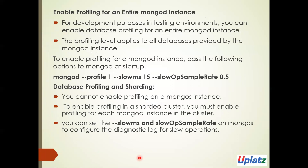To enable profiling for entire MongoD instances — for development or testing purposes — we can enable database profiling for entire MongoD instances. The profiling level is applied to all databases provided by the MongoD instance. To enable profiling, we pass the following options: mongod --profile 1 --slowms 15 --slowOpSampleRate. For database profiling and sharding, we cannot enable profiling on mongos instances. To enable profiling in a sharded cluster, we need to enable profiling for each instance in the cluster. We can set --slowms and --slowOpSampleRate accordingly.